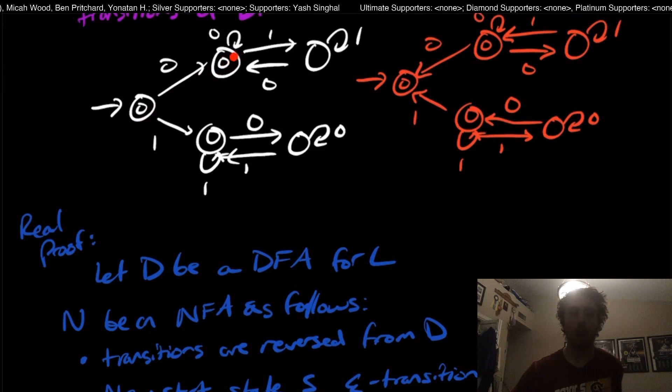And then now what we're going to do is we're going to let N be an NFA as follows. So here, what it's going to do is the transitions from D, just like before, no difference there.